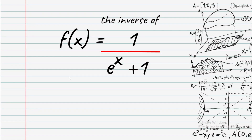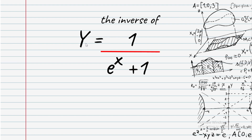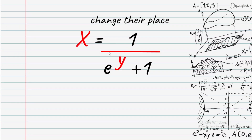The inverse of f equals 1 over e to the power of x plus 1. For f of x, replace y and set x equal to f of y. Then swap x and y — wherever x appears, replace with y and solve for y to find the inverse.